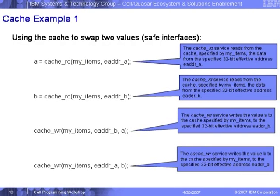Here is an example using the cache to swap two values. We use cache read — an interface provided by the software cache utilities — to read from the cache named 'my items' into address A. Then read again into B. Then cache write A into the cache 'my items' at effective address B, and write B into A. So we read value A out, read B, put A into B, put B into A — we swap two values.